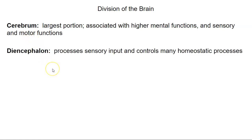The second division is the diencephalon, which processes sensory input and controls many homeostatic processes. When we're looking at the diencephalon, we're mostly talking about the thalamus, the hypothalamus, the posterior pituitary gland, and a few other structures.